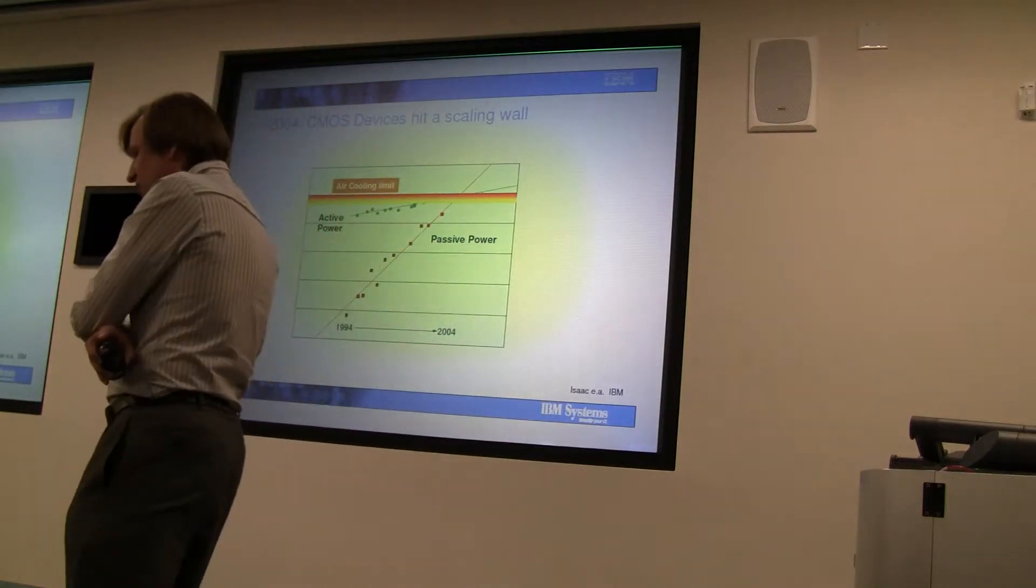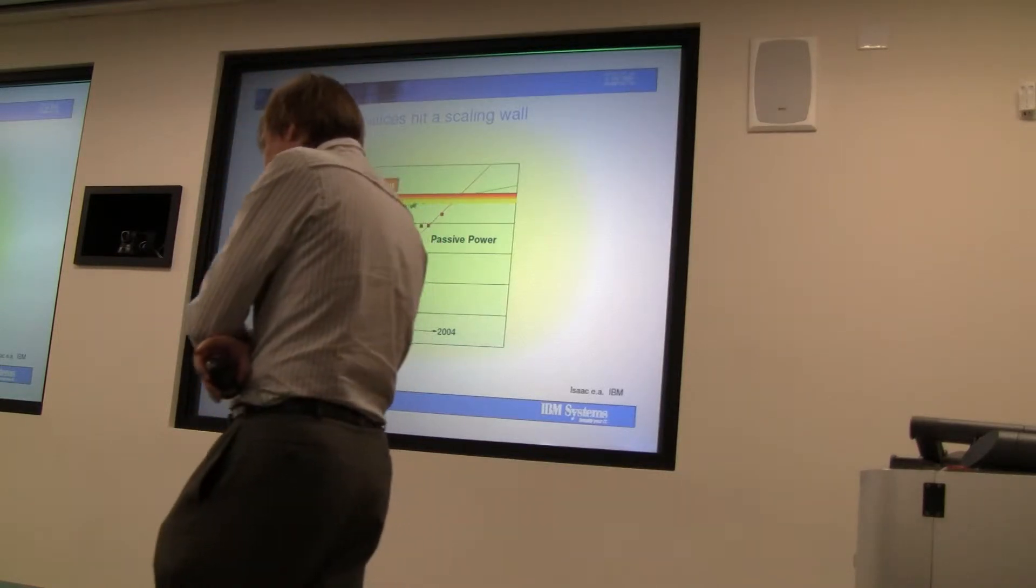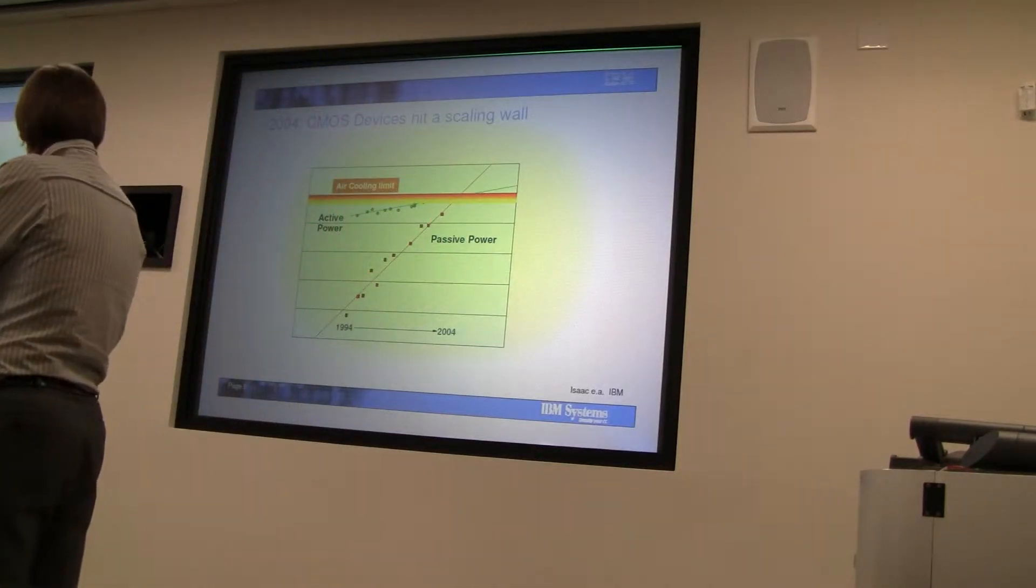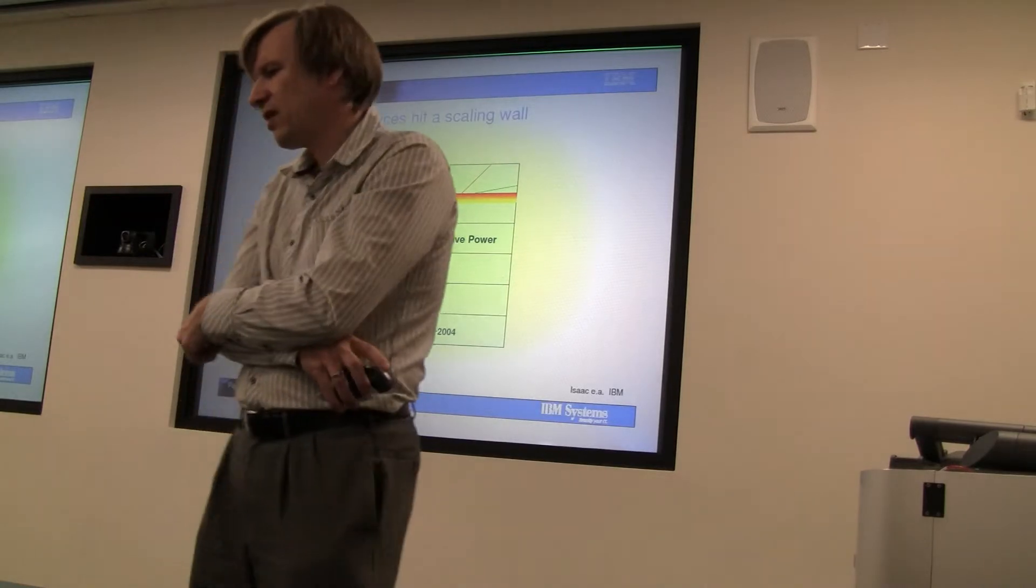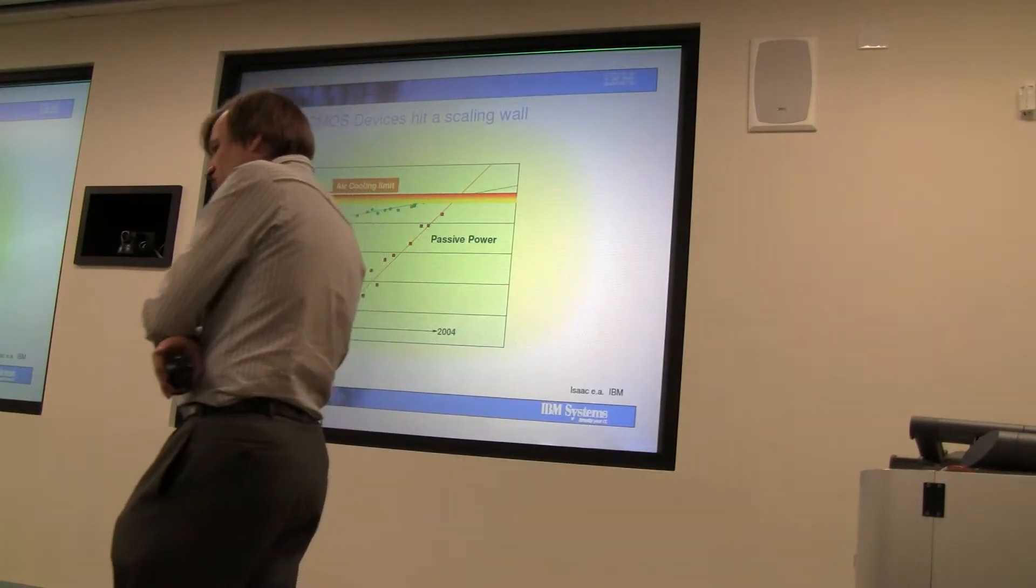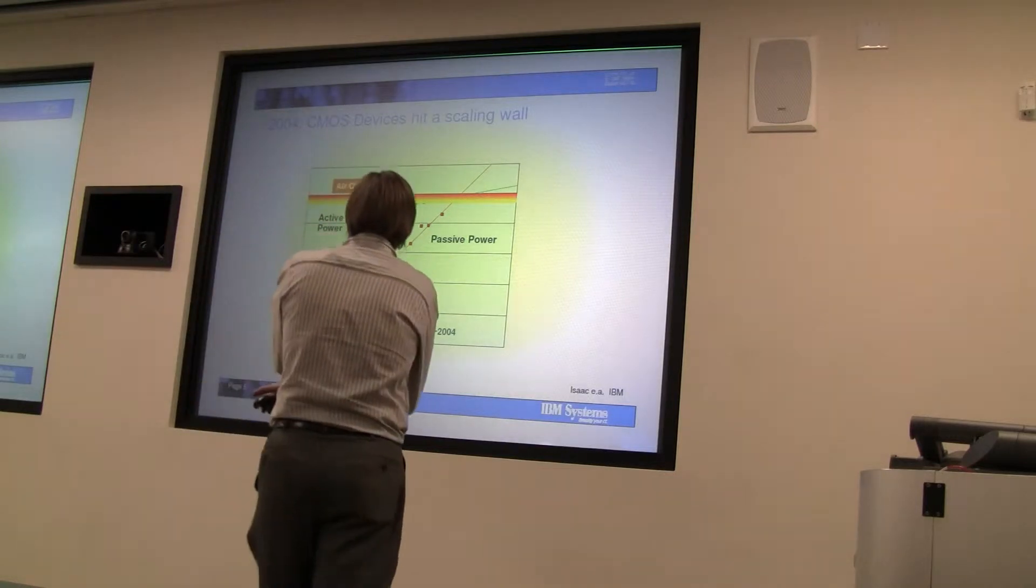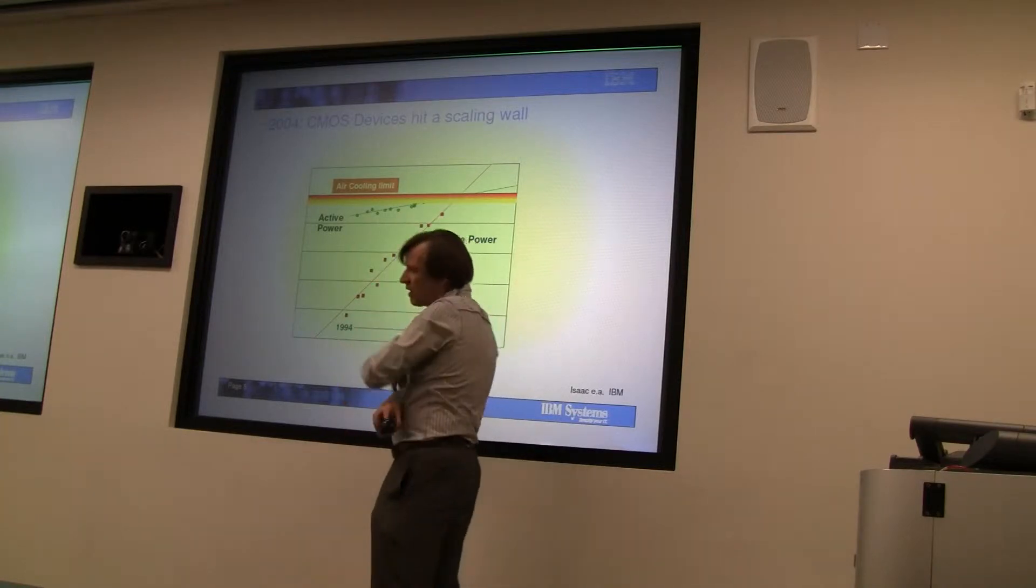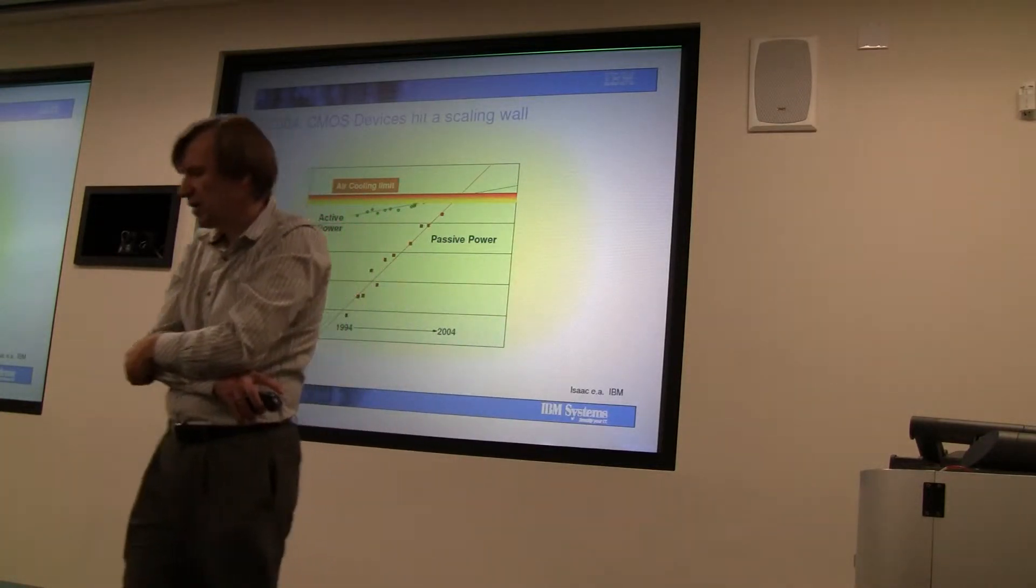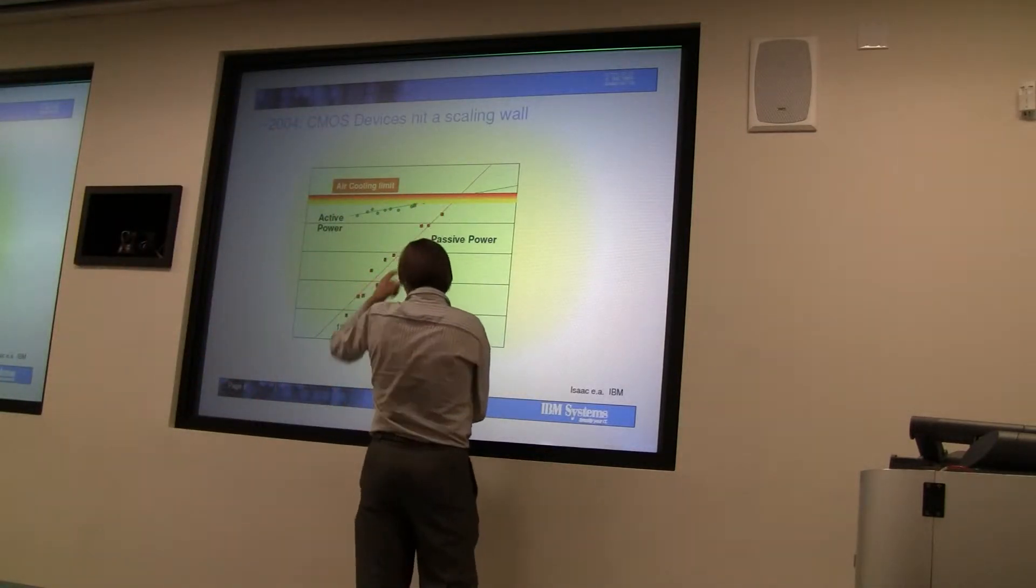What drove us away from the single thread performance game is actually a combination of things, but perhaps one of the most important was that around the transition to 45 nanometer, we got to a point where if we continued to scale our oxides the way we used to, we would have ended up with designs where the leakage power significantly exceeded the switching power.